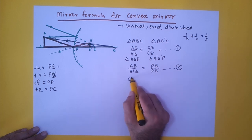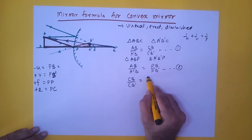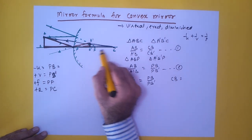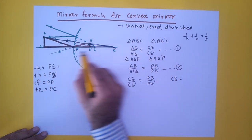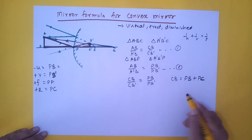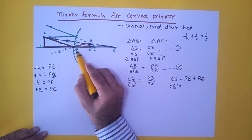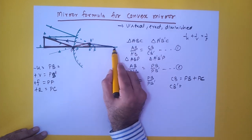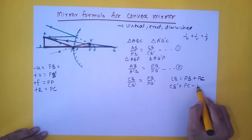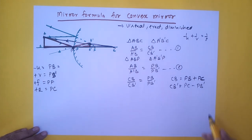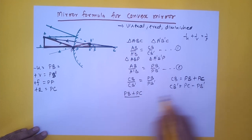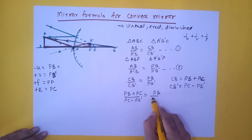Comparing these two equations, we get CB / CB' = PB / PB'. Now we find CB and CB'. CB is equal to PB + PC. CB' is equal to PC minus PB'. Substituting: (PB + PC) / (PC - PB') = PB / PB'.